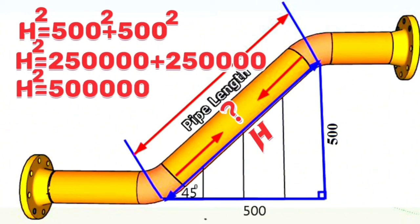Here, after freeing h from the square, we found that length of h is equal to 707 millimeters.